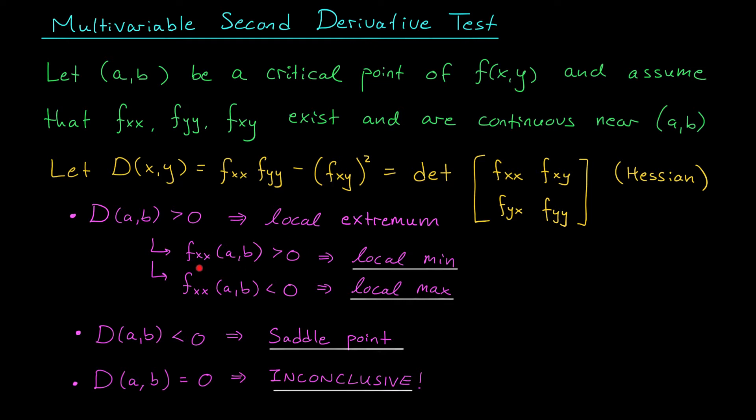we look at the sign of our second derivative fxx. Just like in calc 1, if our second derivative is positive, it means we have a local minimum. If our second derivative is negative, it means we have a local maximum. That's the situation when d(a,b) is positive.